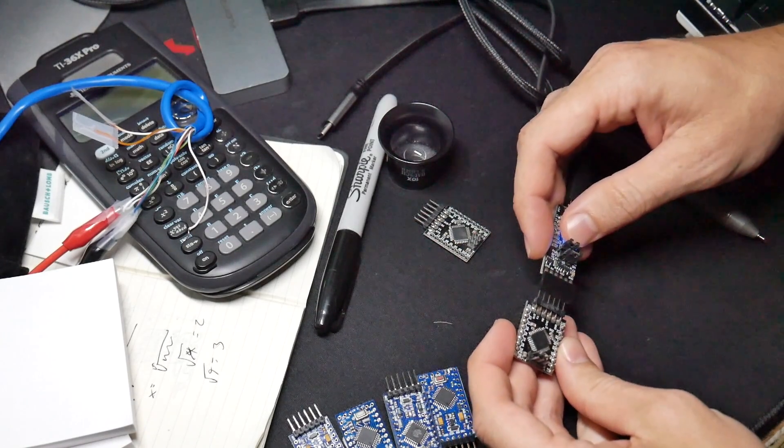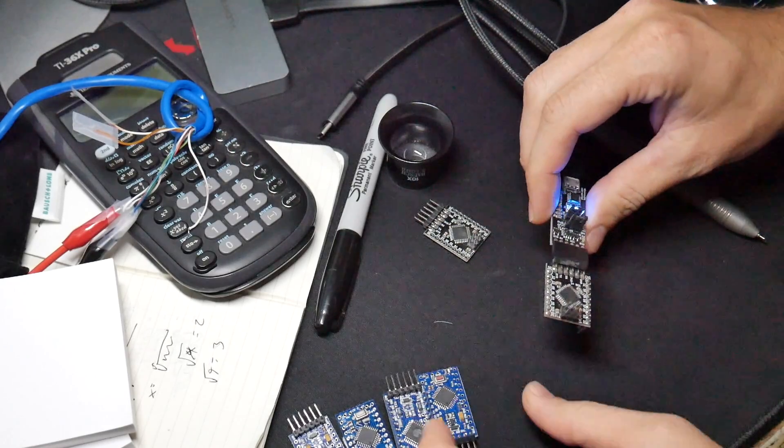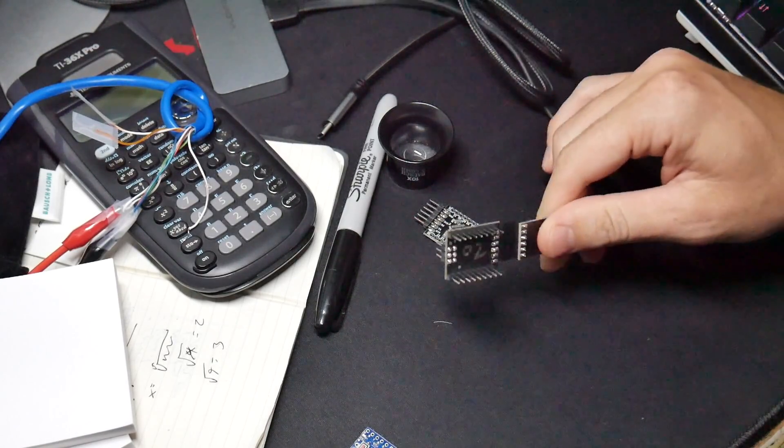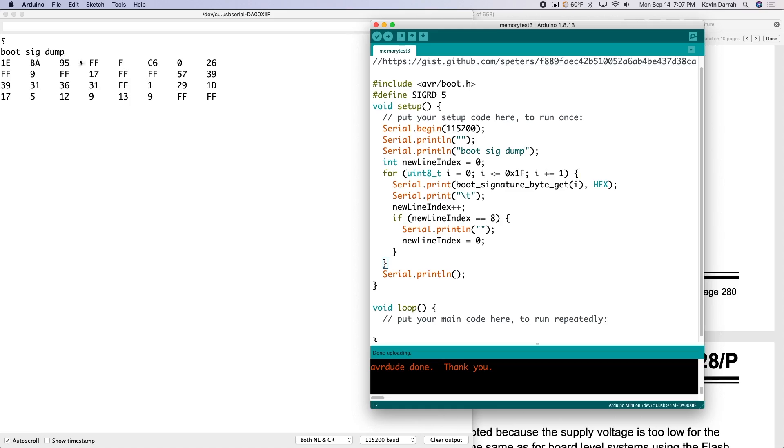So let me show you what this looks like on a genuine part, we're going to hook this up here to an ATmega328P date code 2020. Okay, so you see what's happening here in the code, it just loops through and just prints out everything from zero to 1F. And then just creates a new line after eight readouts.